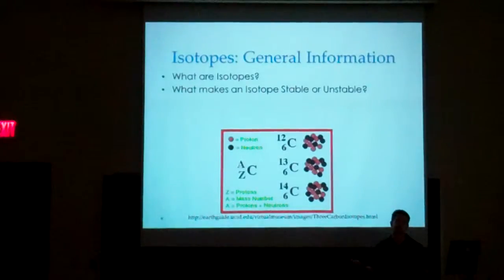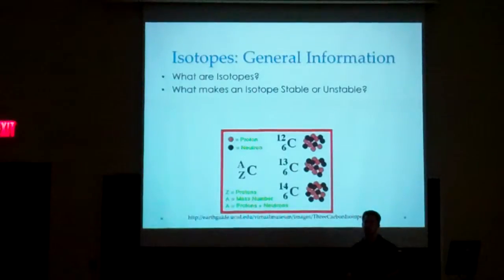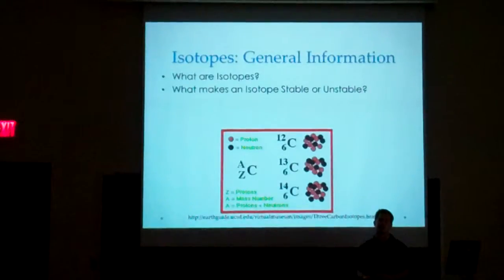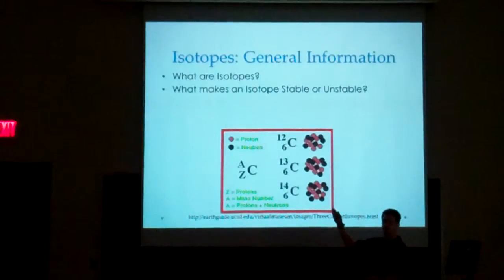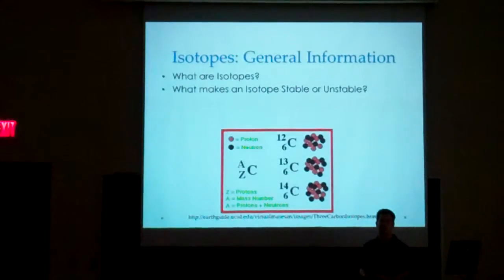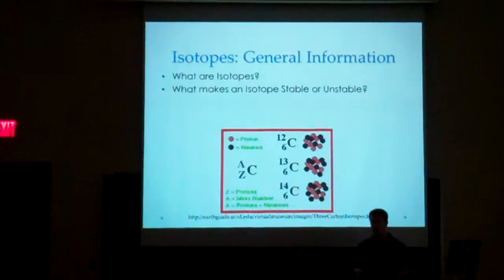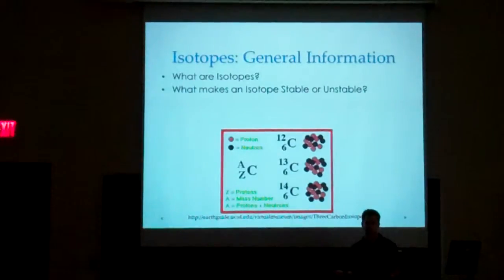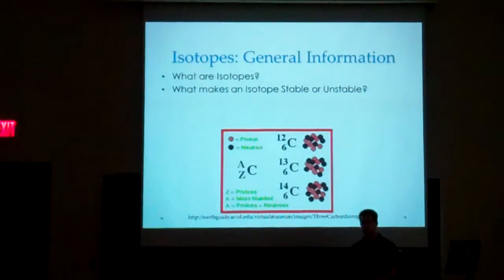The next point is what makes isotopes stable or unstable. This varies for each element — it's the interactions that occur between the atom and the nuclear forces, the bonds between protons and neutrons. Carbon-12 and carbon-13 are both considered stable isotopes. Carbon-14 is considered a radioactive isotope and decays over time, attempting to become stable. For oxygen, oxygen-16 and oxygen-18 stability varies, so the number doesn't always correlate directly with stability — it depends on the element.